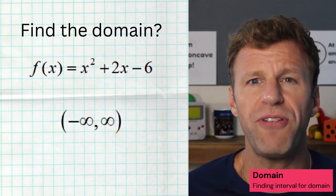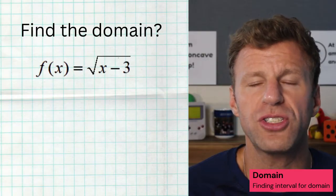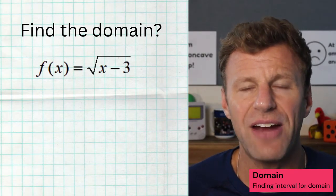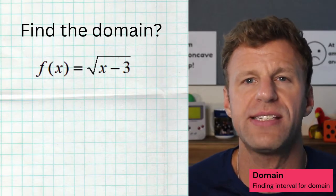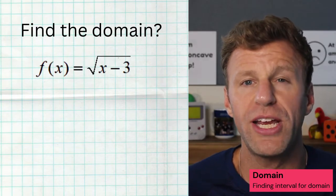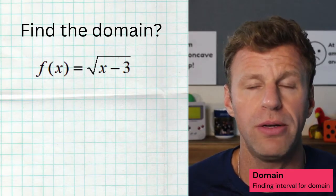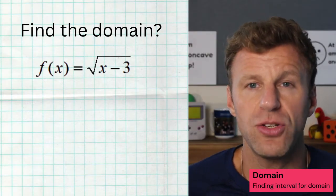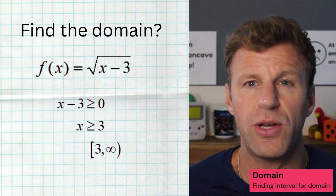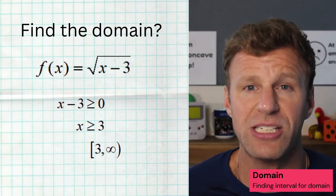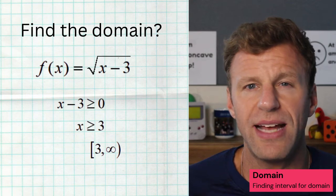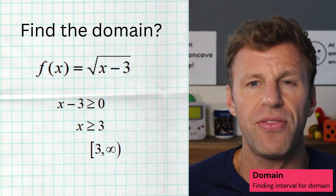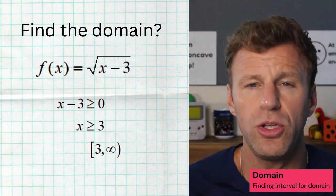Now when we're working with a square root function, there's a really important rule: the inside value of a square root — in this case X minus three — must be greater than or equal to zero. Negative numbers can't happen inside of a square root. So to find the domain, we simply take X minus three, set it greater than or equal to zero and solve, and we get X has to be greater than or equal to three, which means the domain is the interval three to infinity with a bracket on that three because we want to include it.